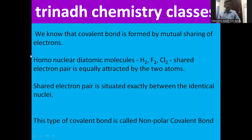We know that a covalent bond is formed by the mutual sharing of electrons. Mutual sharing means the atoms participating in bonding each contribute one electron, and that electron pair is shared equally by the two atoms — that is called mutual sharing. Molecules are classified into monoatomic, diatomic, and polyatomic.